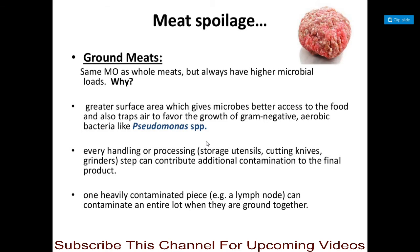Ground meats have the same microorganisms as whole meats but always have higher microbial loads. The greater surface area gives microbes better access to the food and traps air to favor the growth of gram-negative aerobic bacteria such as Pseudomonas. Every handling or processing step — storage utensils, cutting knives, grinders — can contribute additional contamination, and heavily contaminated parts like lymph nodes can contaminate the entire lot when ground together.